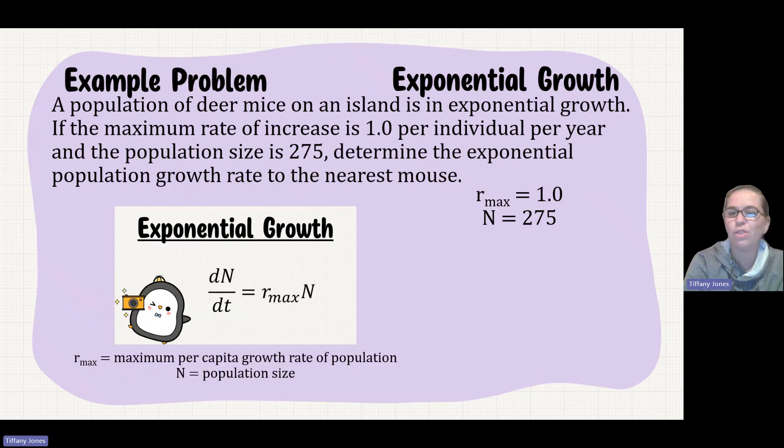Go ahead and pause the video and see if you can solve this next problem. A population of deer mice on an island is in exponential growth. If the maximum rate of increase is 1.0 per individual per year and the population size is 275, determine the exponential population growth rate to the nearest mouse.